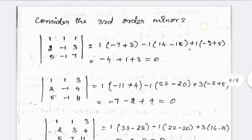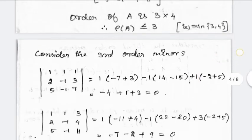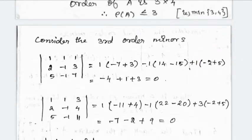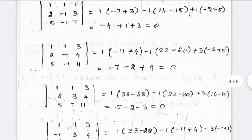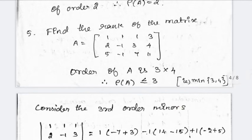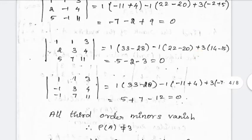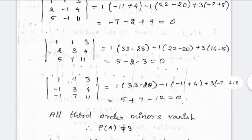Value is 0. Columns 1, 2, 4 — value is 0. Columns 1, 3, 4 — value is 0. All third-order minors give value 0. Then value is 0 again. Rank of the matrix is not equal to 3.